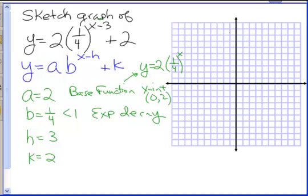Let's graph our base function. The horizontal asymptote on the base function is always y equals 0, and we have a y-intercept at (0, 2). Plugging in x equals 1, we get 2 times 1 fourth to the first power, which is 2 times 1 fourth or 1 half. So we have the point (1, 1 half). We can see we're coming down steeply then flattening out. That's our sketch of the base function — not the graph for our problem, which needs the effects of k and h.